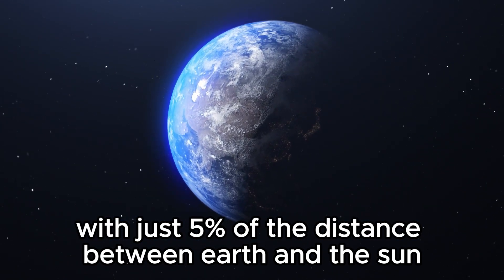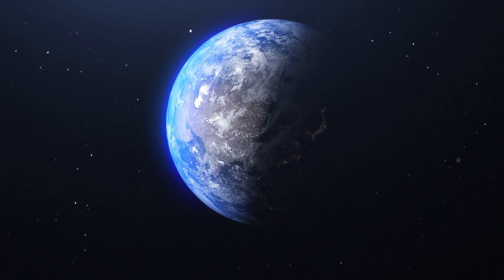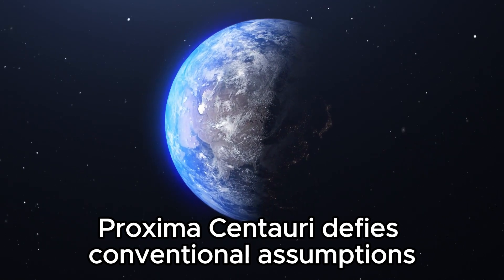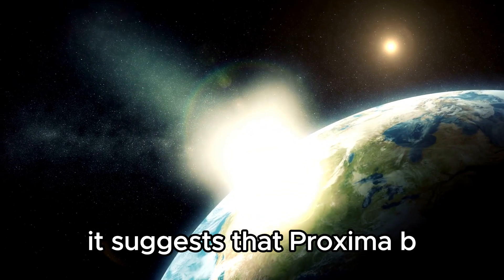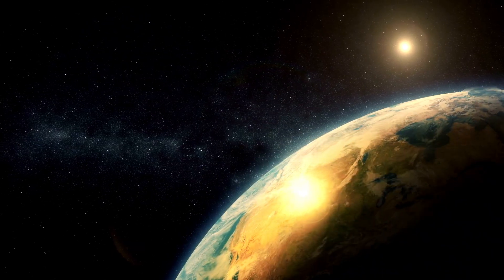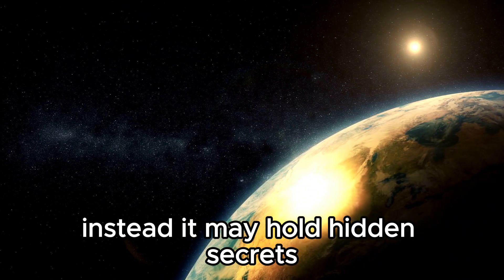emitting significantly less light than expected. Combined with its proximity to Proxima b, just 5% of the distance between Earth and the Sun, Proxima Centauri defies conventional assumptions. It suggests that Proxima b might not be a regular planet. Instead, it may hold hidden secrets.